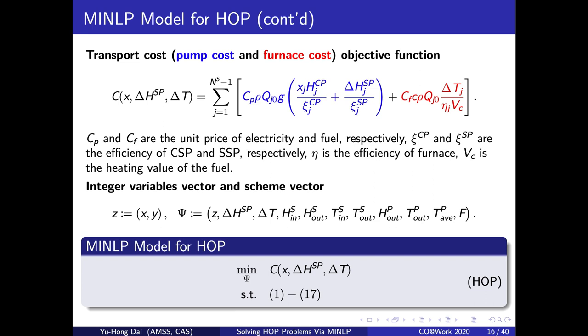The objective function is the total transport cost of the HOP, including pump cost and furnace cost. Finally, with all the constraints and objective functions, we obtain the MINLP model for the HOP problem. We denote it as HOP with a pair of brackets.